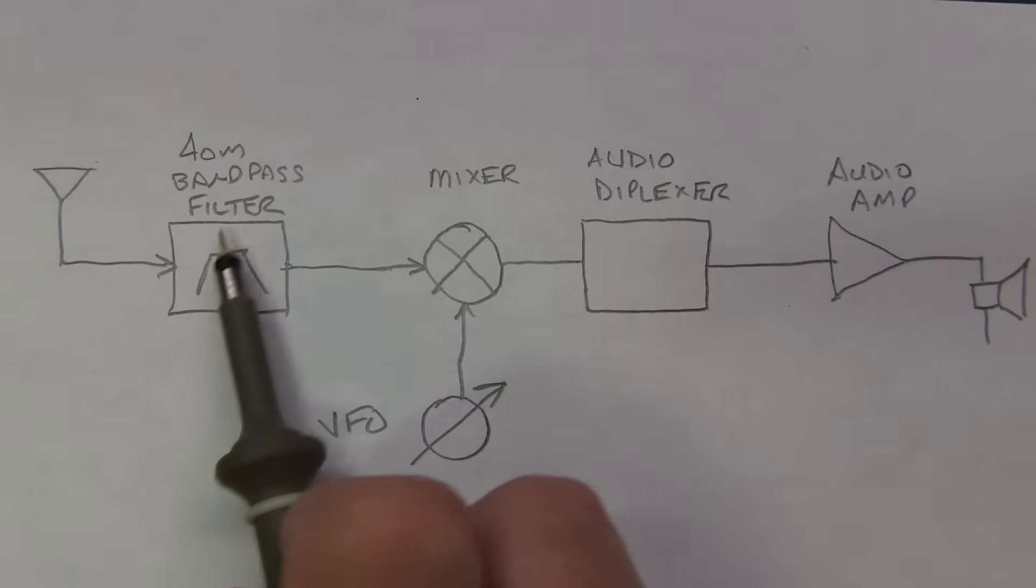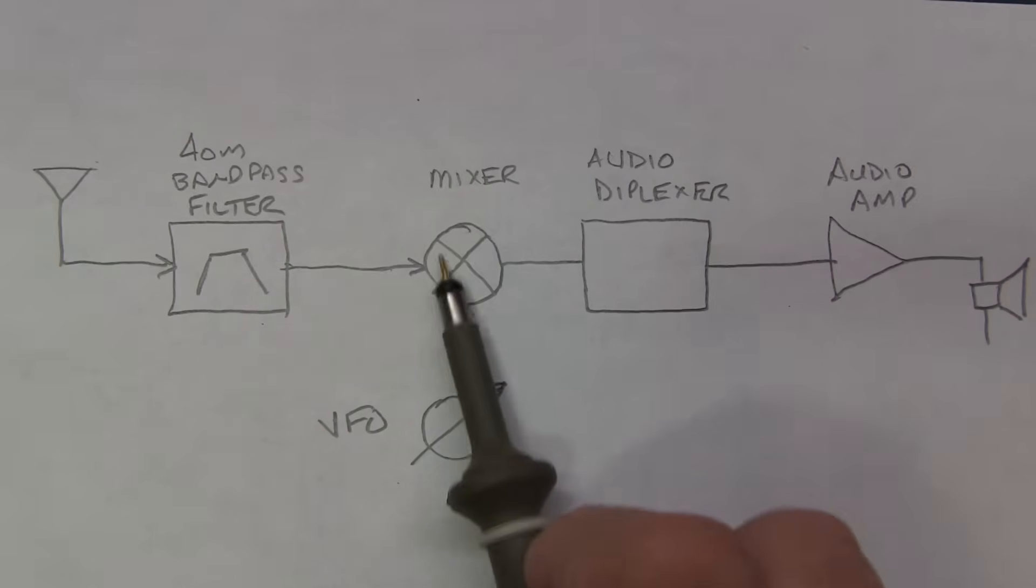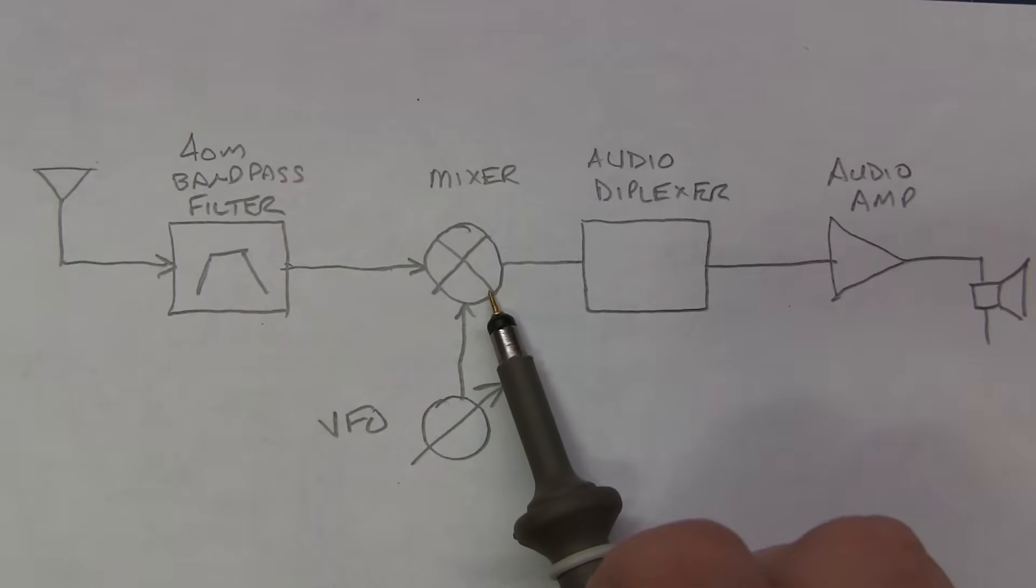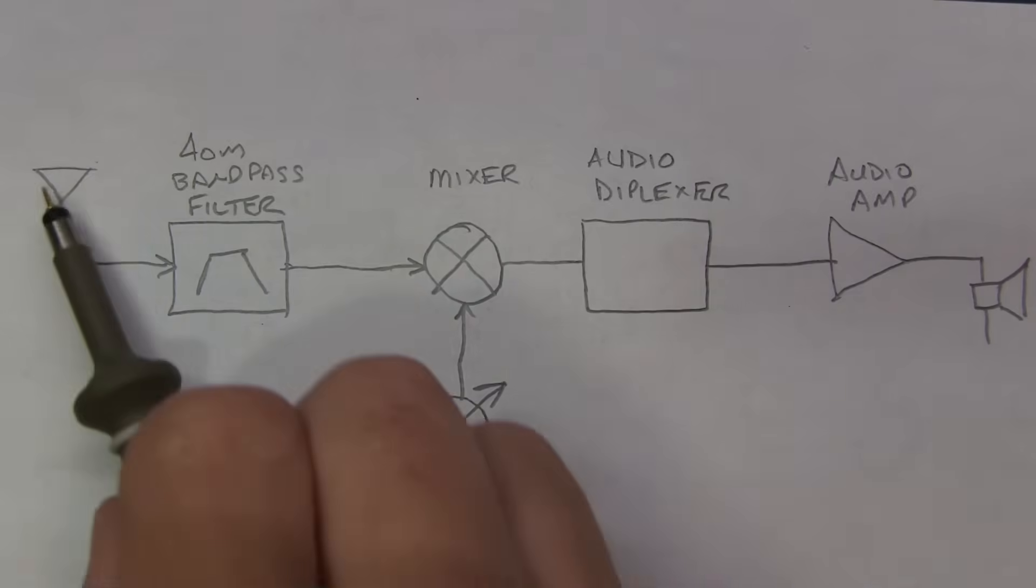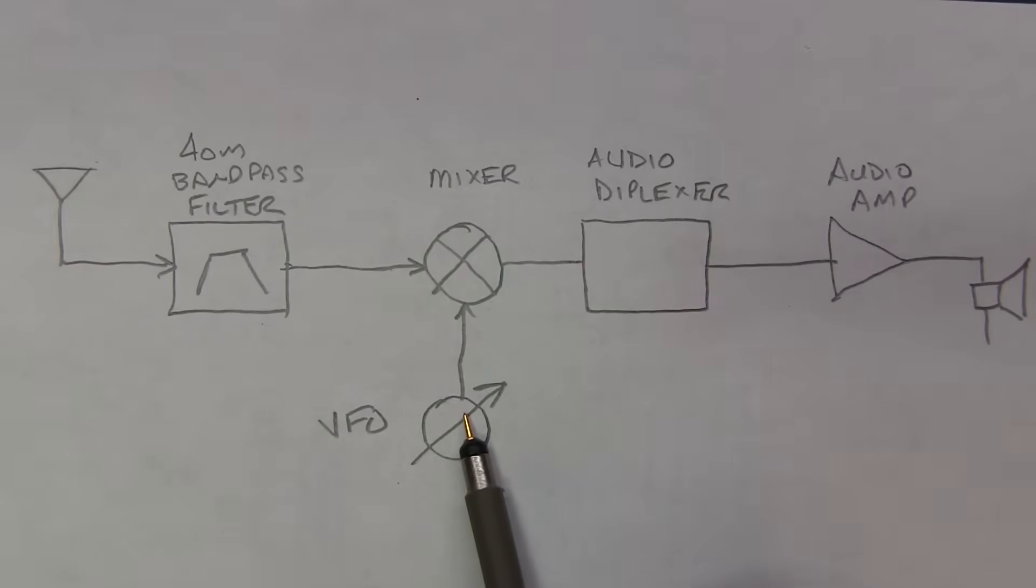Signals coming out of that passive bandpass filter get presented into a mixer. It's a simple 4-diode diode ring mixer. The local oscillator is provided by a variable frequency oscillator that's tuned to essentially the frequency you want to measure, hence called a direct conversion receiver. We're just taking the input signal and converting it right down, immediately down to audio.